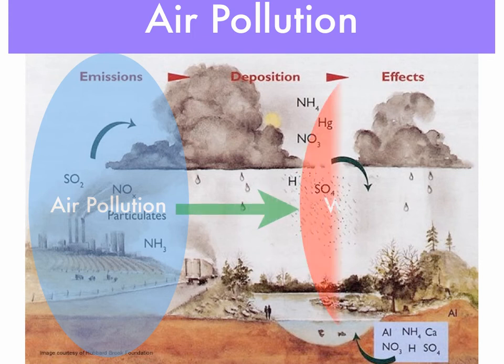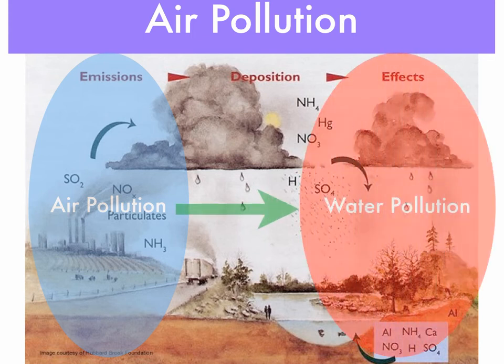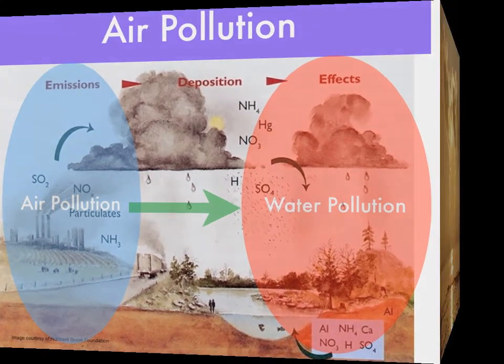After the water has been chemically changed, it falls down onto the ground and into the water, leading to water pollution and soil pollution. So acid rain really starts as pollution in the air and then causes its effects in water and soil. We call it an air pollution because that's where it originates — pollution to the air.